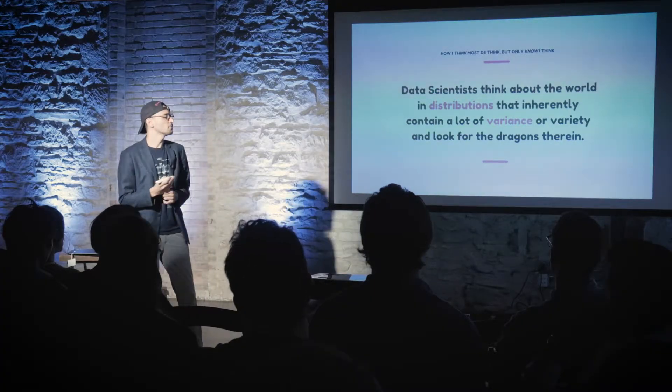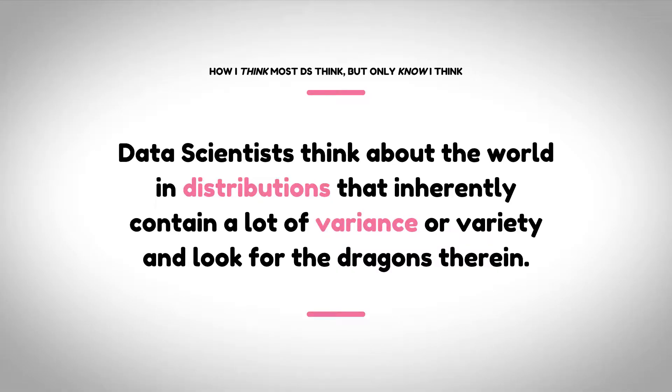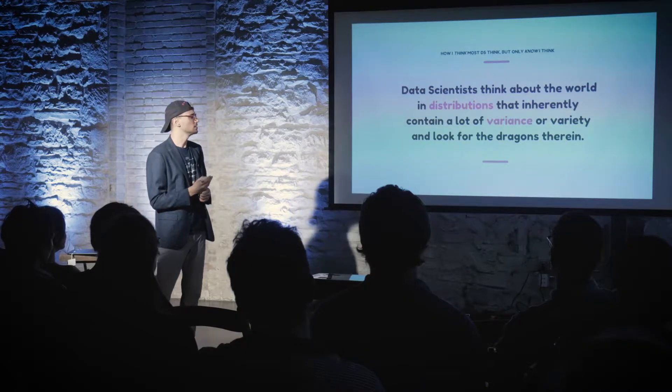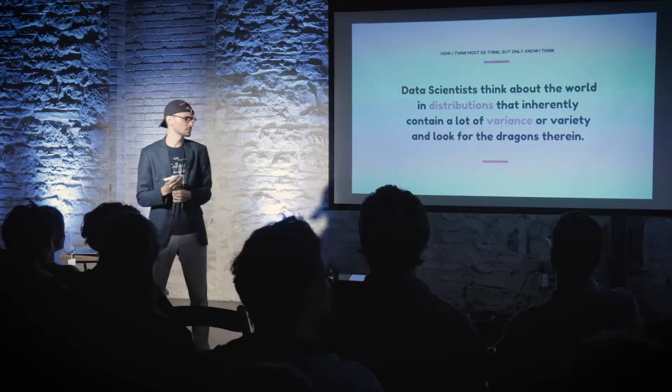This is how I think most data scientists think — at least I know I think this way. I have come to think about the world in distributions, and these distributions inherently contain a lot of variance, by which I just mean variety. There's a lot of variety and variance in data, and that's how I would approach thinking through designing features or coming up with products. You have to look at the data first, figure out who you're targeting, and think about edge cases in that data. That's really the skill set of a data scientist in the context of design — and it's not something I think is that hard for people who aren't data scientists to master.